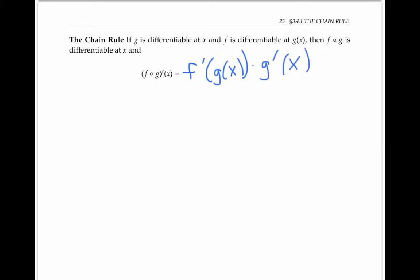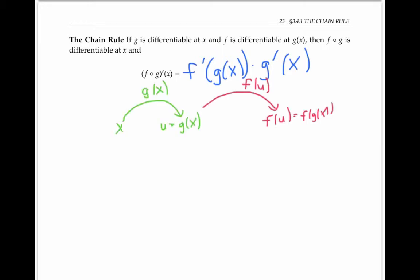If we write this as a diagram, as we have been doing, then to take the derivative of the composition, we take the derivative of the inner function and multiply it by the derivative of the outer function evaluated at u. Remember that u here is the same as g of x.